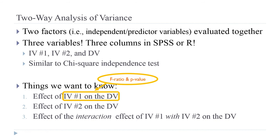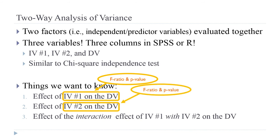You have another F-ratio and P-value for your second independent variable — the relationship between your second independent variable and your dependent variable, the difference between the means. And then you have a third F-ratio and P-value for the interaction effect.